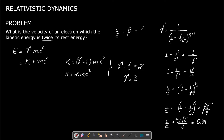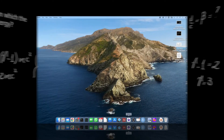So an electron whose kinetic energy is twice its rest energy will have a velocity of approximately 94 percent of the speed of light c. Now if we use R to verify this...